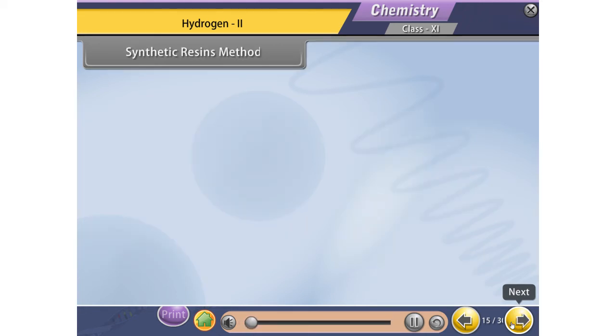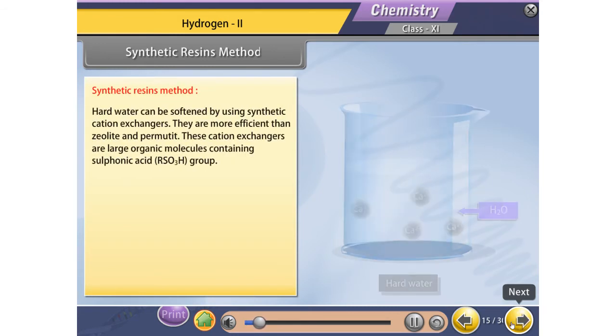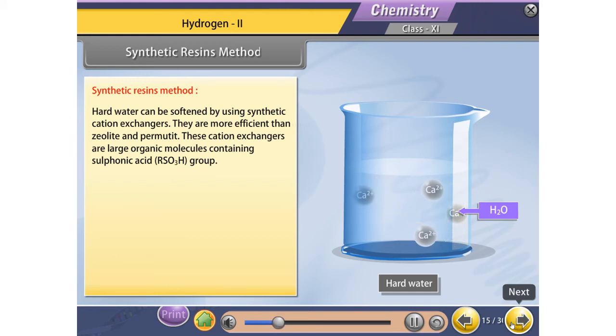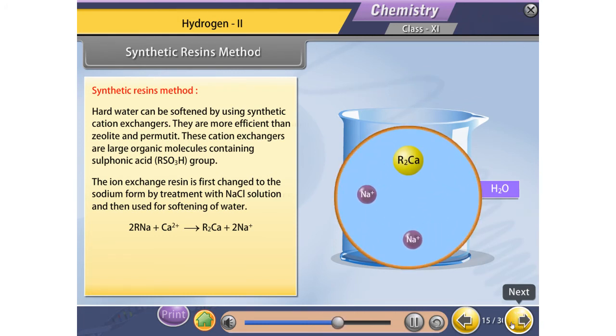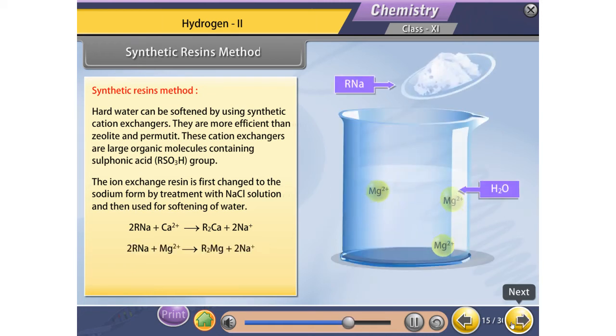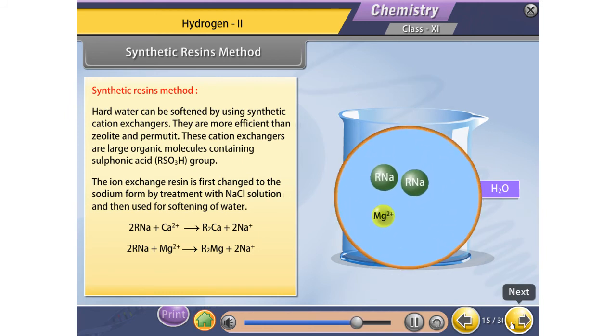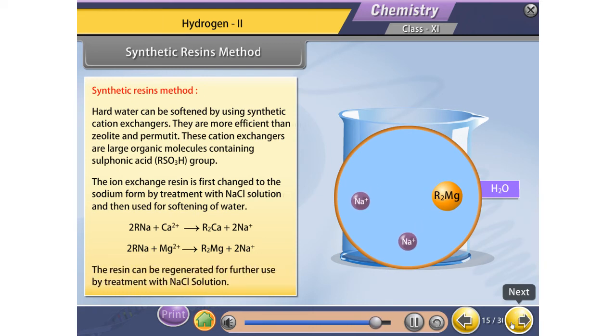Synthetic resins method: Hard water can be softened by using synthetic cation exchangers. They are more efficient than zeolite and permutit. These cation exchangers are large organic molecules containing sulphonic acid, RSO3H group. The ion exchange resin is first changed to the sodium form by treatment with NaCl solution and then used for softening of water. The resin can be regenerated for further use by treatment with NaCl solution.